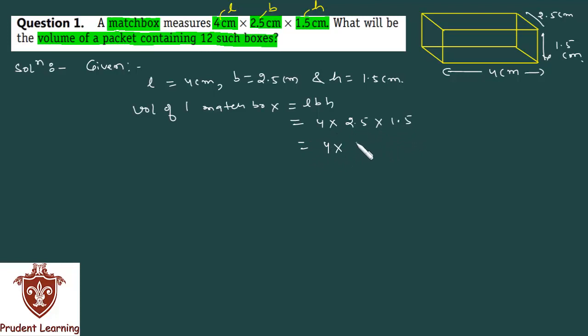You can write 2.5 as 25/10 and 1.5 as 15/10. So we have: 4 × 25/10 × 15/10. Now 25 × 4 is 100, times 15 is 1500. And 10 × 10 is 100. Cancel the zeros - we get 15.